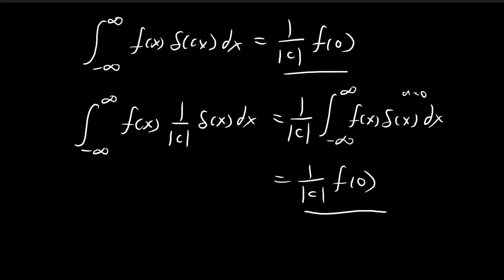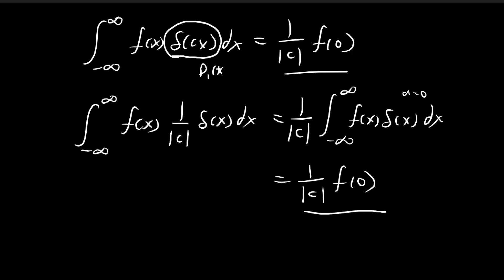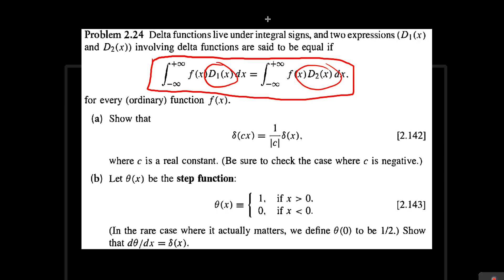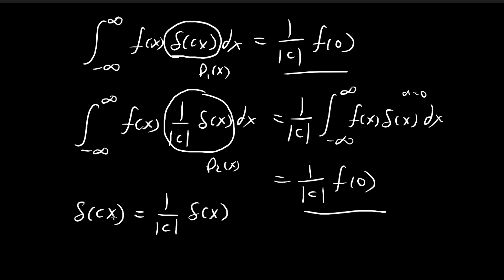Going back to the question, this means d1 of x equals d2 of x. So the Dirac delta function of cx is equal to 1 over the absolute value of c times the Dirac delta function of x. This is how you prove it.